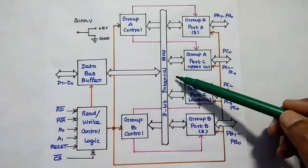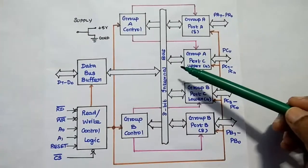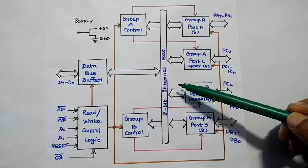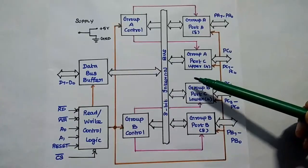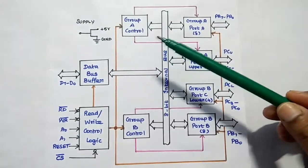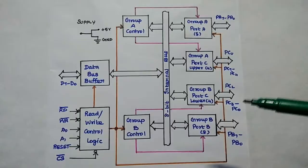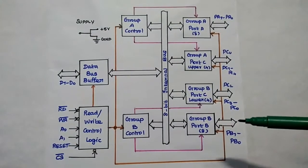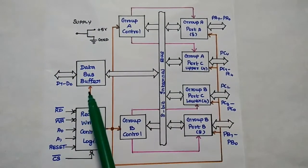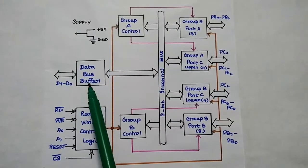An 8-bit internal bus is used to transfer data between the processor and the 8255A. The supply voltage is plus 5V. This is the overall architecture of the 8255A.